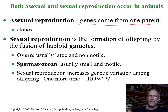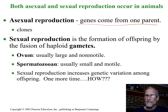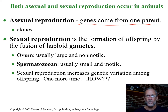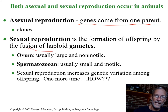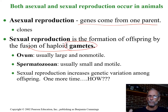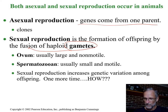Just to review: asexual reproduction produces offspring that are just like parents and just like each other — like clones. But sexual reproduction involves a lot of variety in the formation of gametes, through crossing over and random lining up of chromosomes in meiosis I, and then random fertilization.